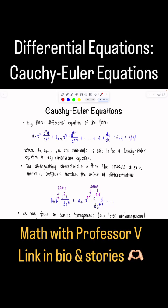What is a Cauchy-Euler equation and how do we solve it? I just want to give a brief introduction about the form and then we'll get into lots of examples, eight of them to be exact.